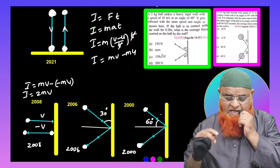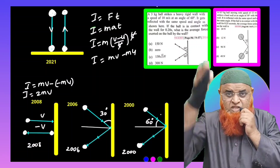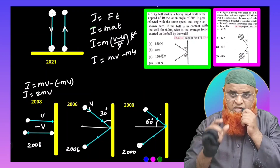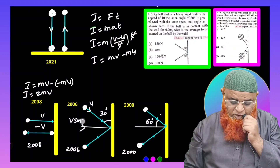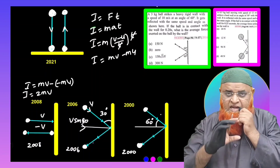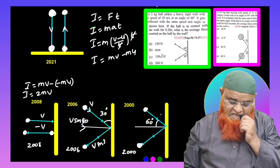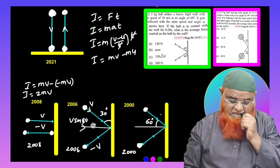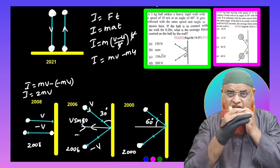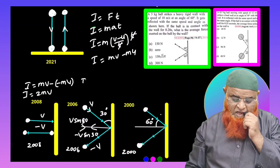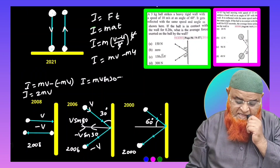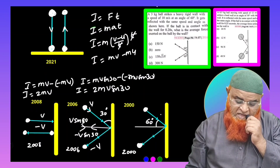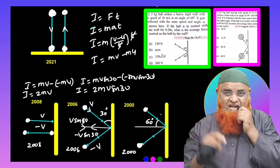In 2006, the ball makes 30 degrees with the wall. You consider the component of velocity normal to the wall, which is V sin 30. After striking, the component in the opposite direction is minus V sin 30. Therefore, impulse = M × V sin 30 − (−M × V sin 30) = 2MV sin 30. This gives the answer to the 2006 problem.